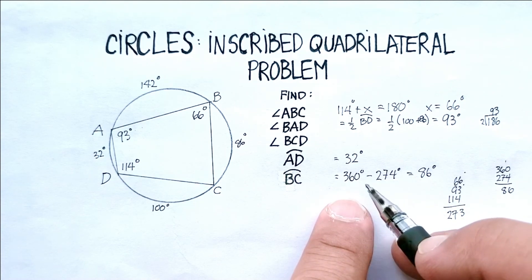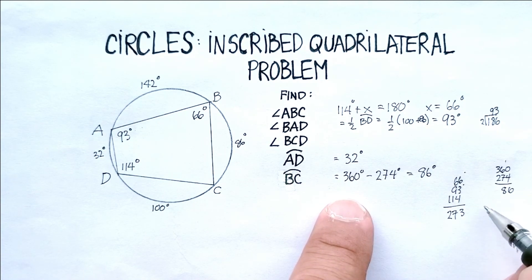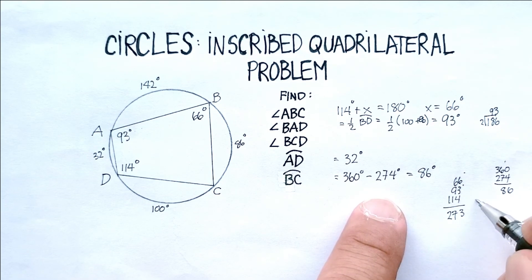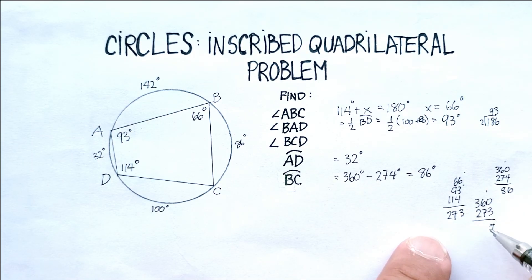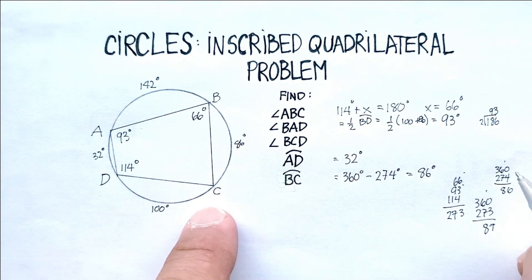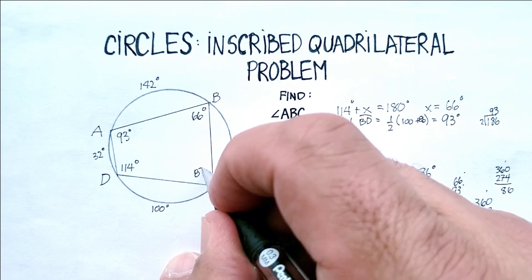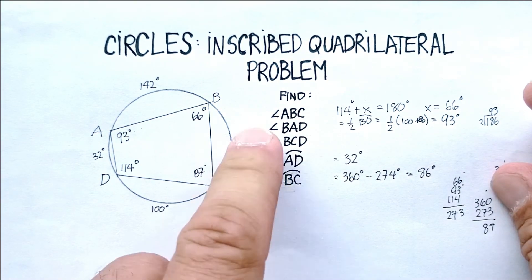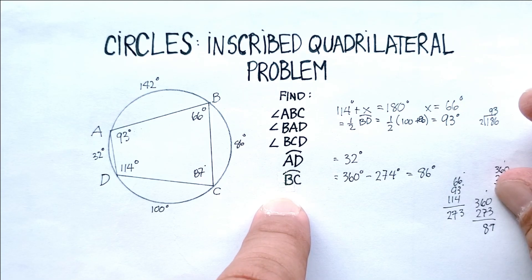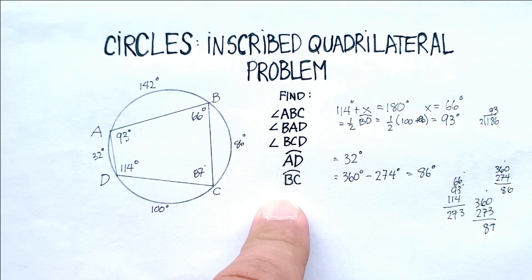Let's subtract that from 360, minus 273. There's a 7, there's a 5, 87 degrees. And that's how we find every single one of these angles and arcs. Okay, I hope that was helpful.